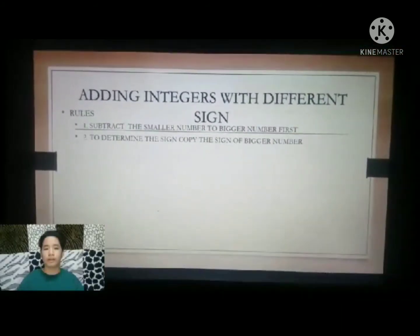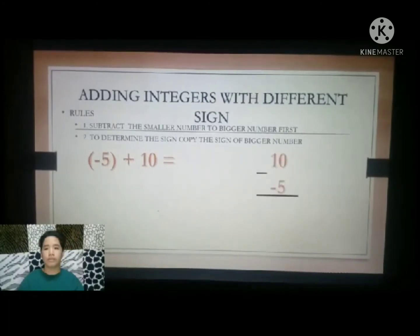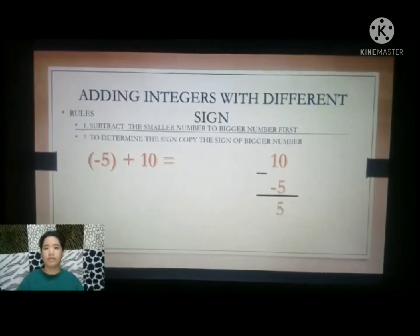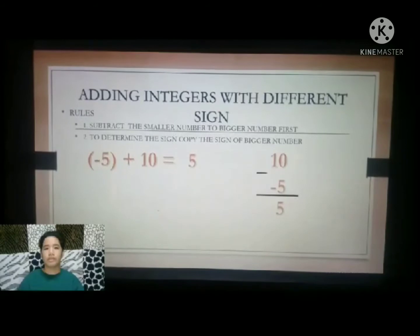Example 1: Negative 5 plus positive 10. Subtract the smaller number from the bigger number first: positive 10 minus 5 equals 5. To determine the sign, copy the sign of the bigger number. Positive 10 is bigger than negative 5, so our answer is positive 5.